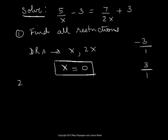The second step is to find the LCD of all the rational expressions in the given equation. We look at these denominators x and 2x and determine the LCD. Between x and 2x, we can quickly recognize that the LCD is 2x.